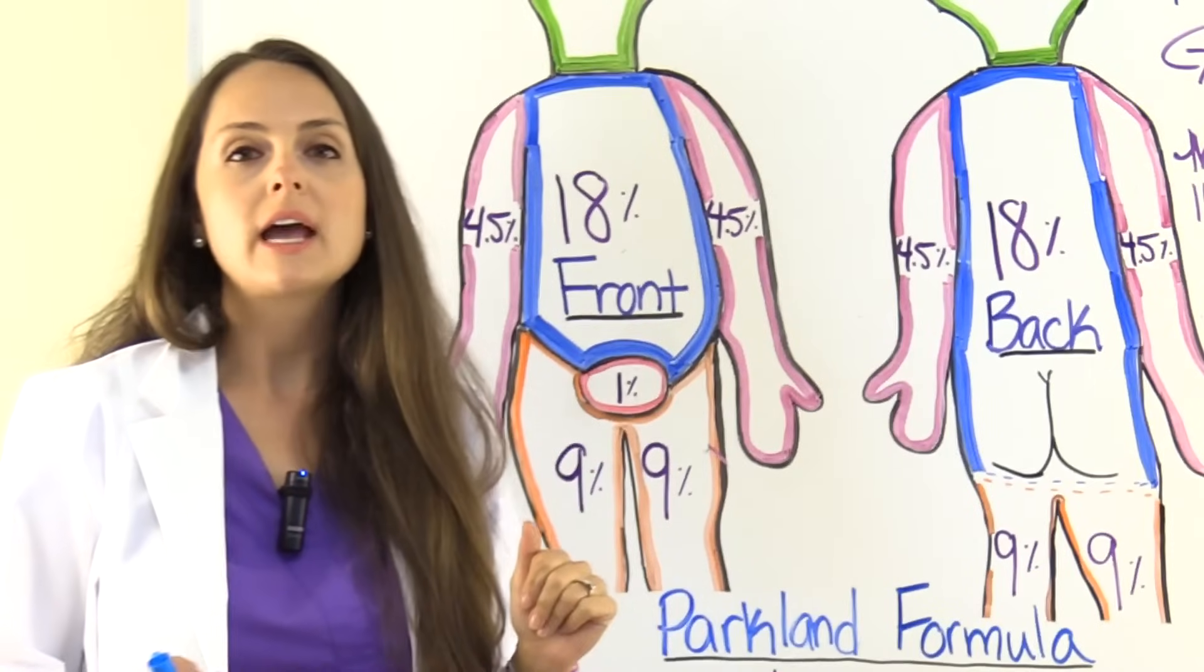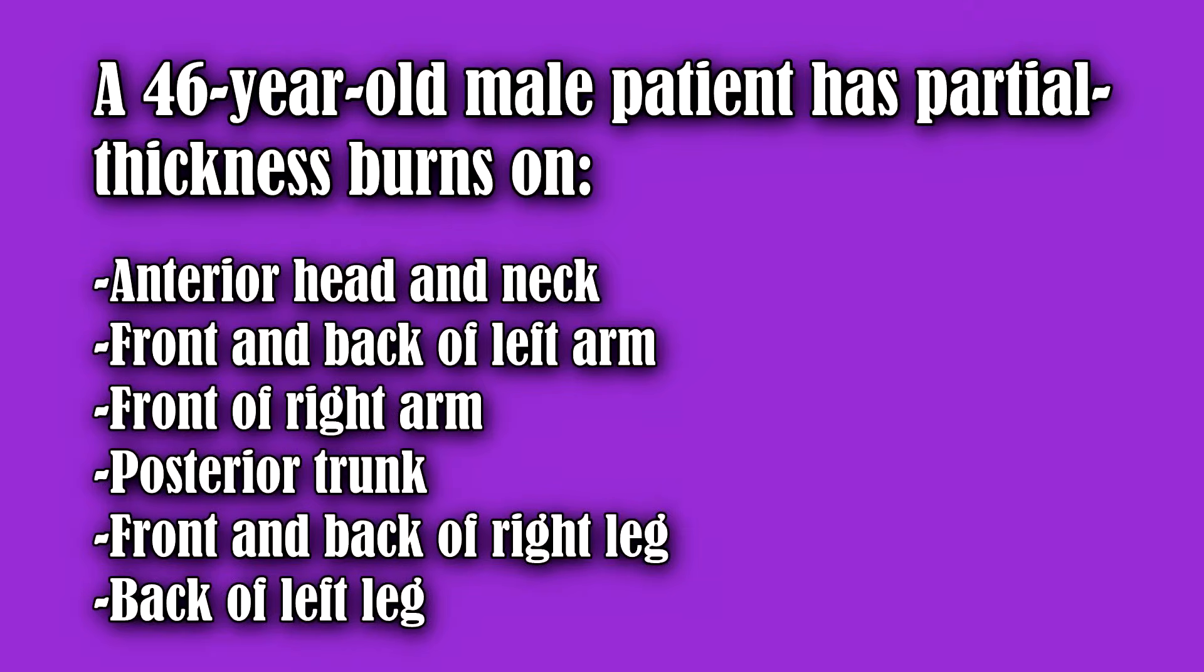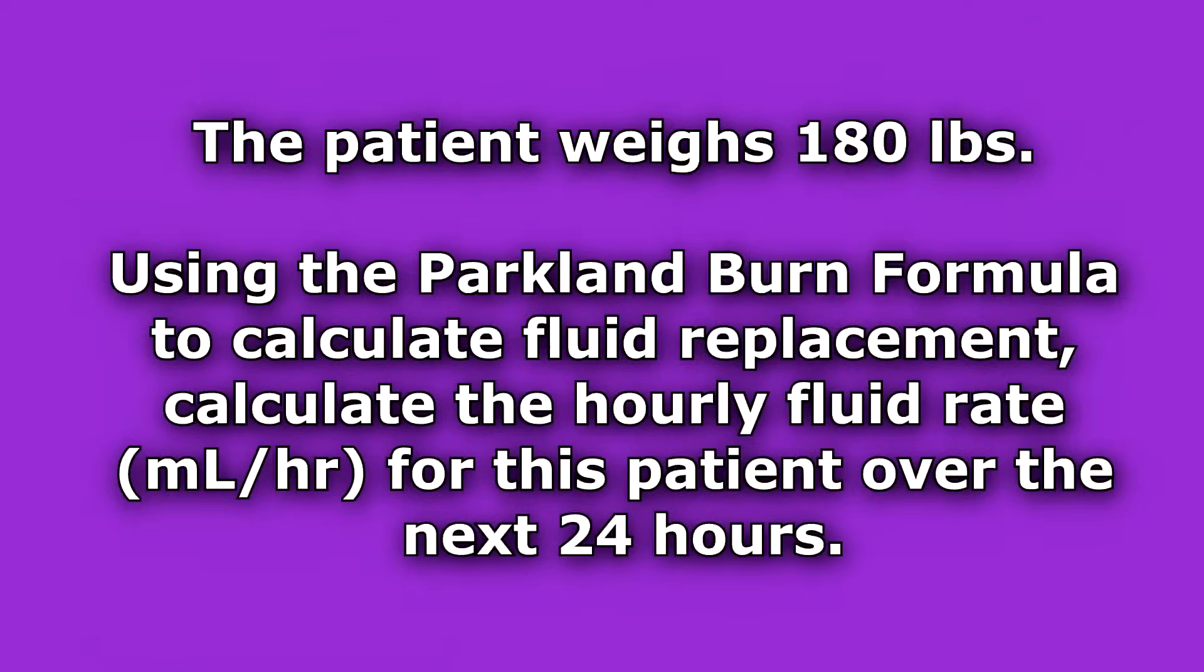So now let's work a sample practice problem. Our problem says, a 46-year-old male patient has partial thickness burns on the anterior head and neck, the front and back of the left arm, the front of the right arm, posterior trunk, the front and back of the right leg, and the back of the left leg. The patient weighs 180 pounds. Using the Parkland burn formula to calculate fluid replacement, calculate the hourly fluid rate, milliliters per hour, for this patient over the next 24 hours.